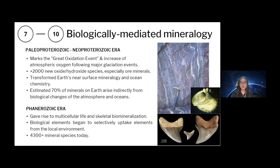The Paleoproterozoic Great Oxidation Event and subsequent Neoproterozoic increase in atmospheric oxygen irreversibly transformed Earth's near-surface mineralogy and ocean chemistry. More than 2,000 new oxide or hydroxide species, especially ore minerals, were formed. Indications of robust microbial carbonate and phosphate biomineralization were observed in carbonate depositions.